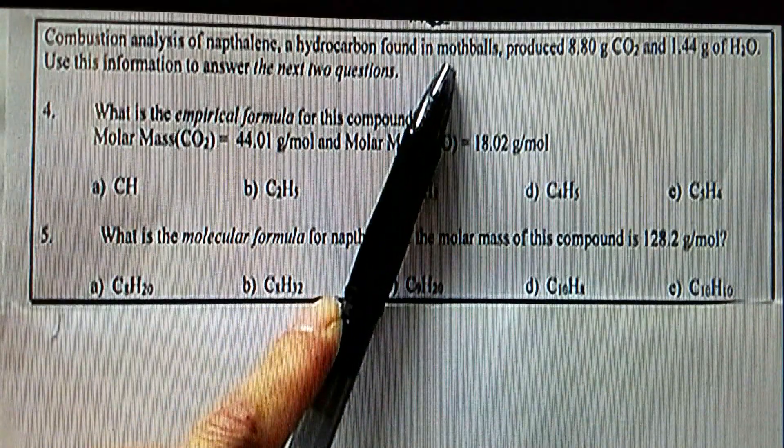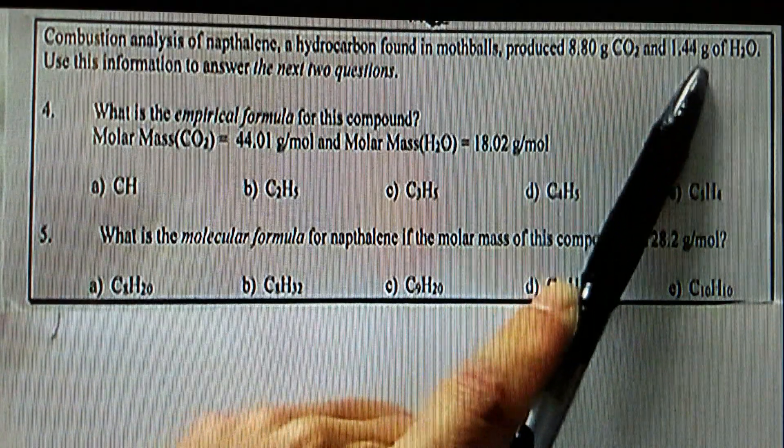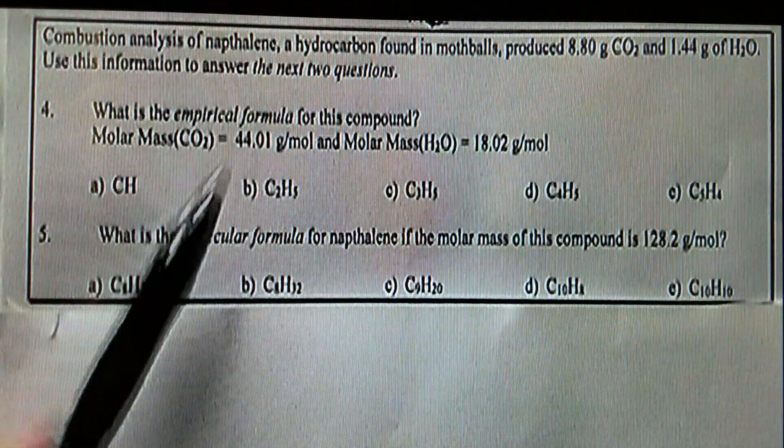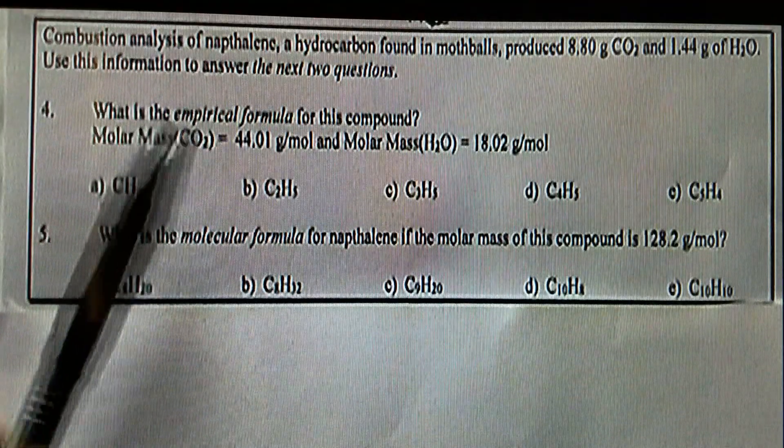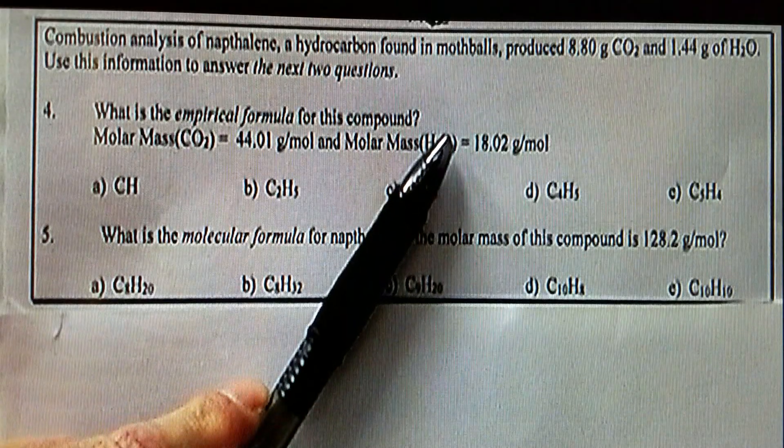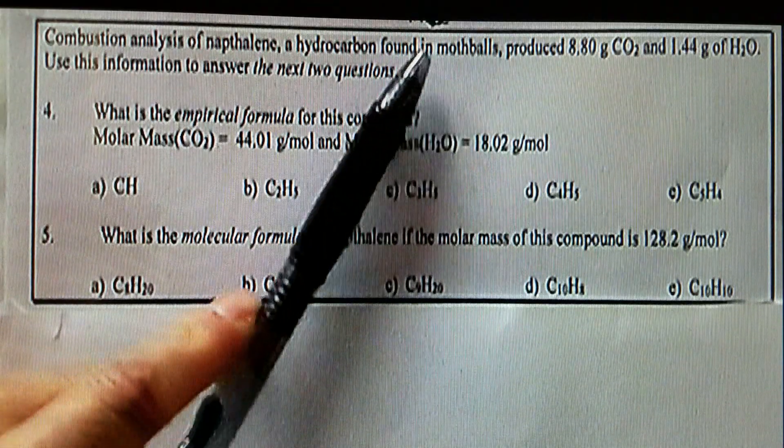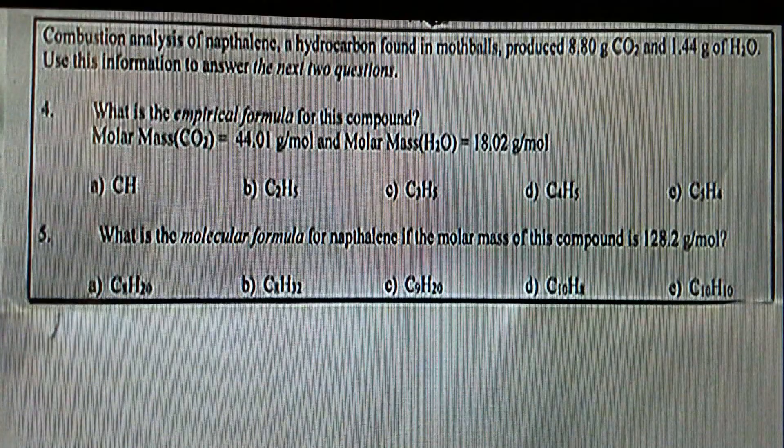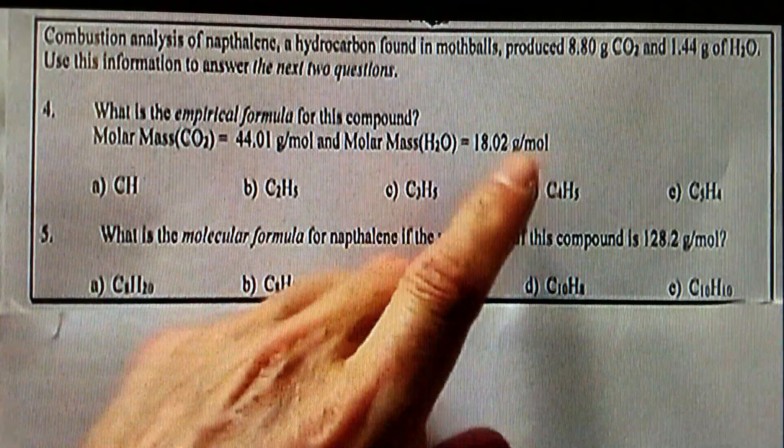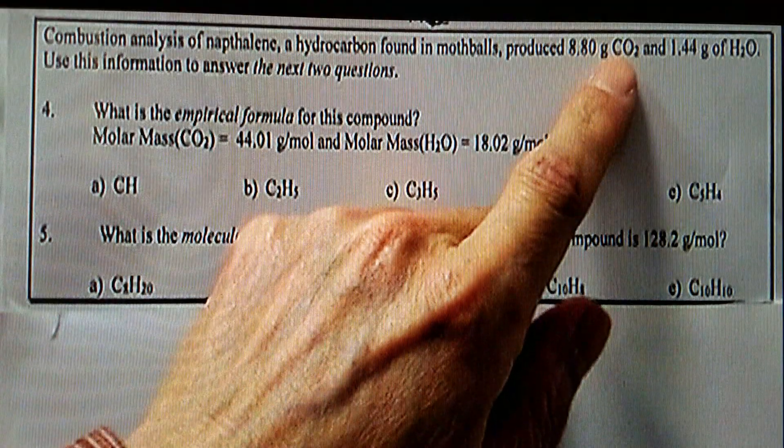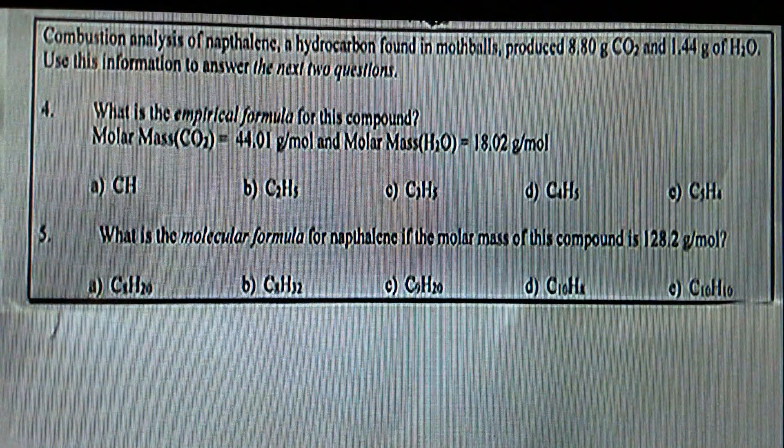Found in mothballs, produced 8.8 grams of CO2 and 1.44 grams of water. Use this information to answer the next two questions, which means question number four and question number five. Number four, what is the empirical formula for this compound? We need to find out the number of moles of carbon from CO2 and hydrogen from H2O. That's what we are going to do.